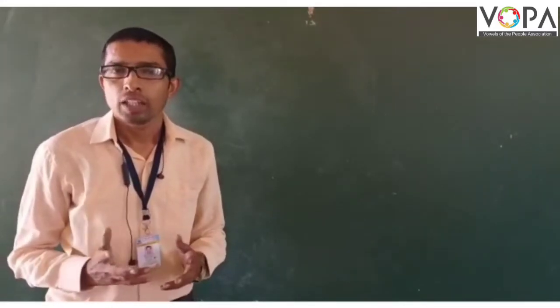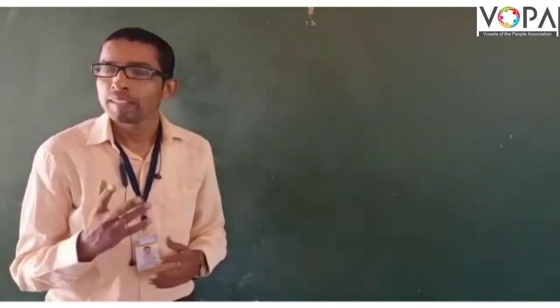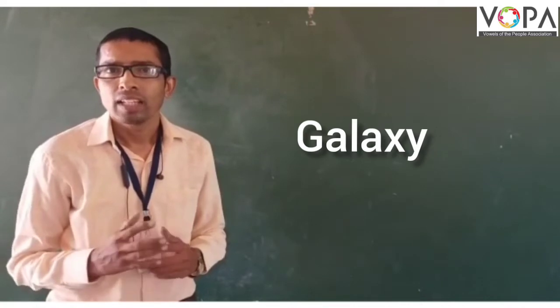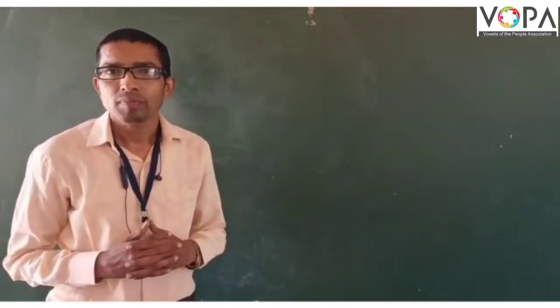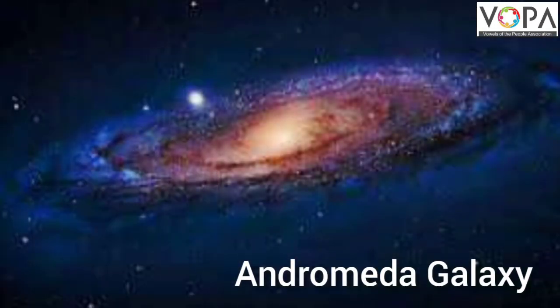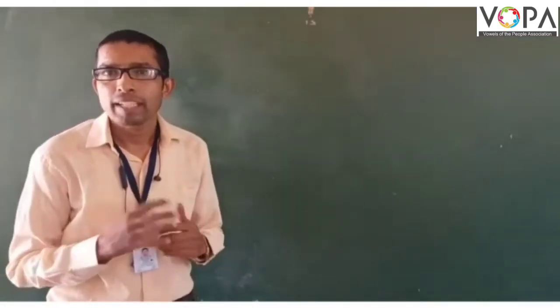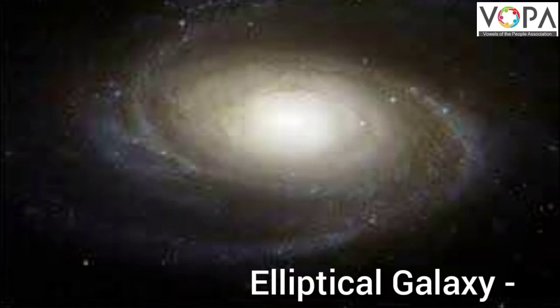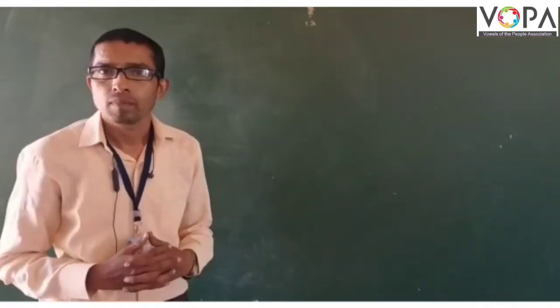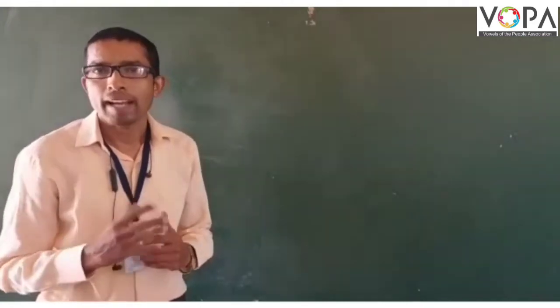Now we get information about galaxies. There are so many types of galaxies. The Andromeda galaxy is the closest galaxy to our Milky Way. Next, the elliptical galaxy—in this galaxy the stars are rounded to circular in the center. Next, the spiral galaxy.